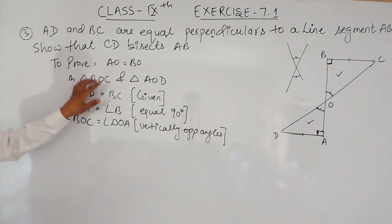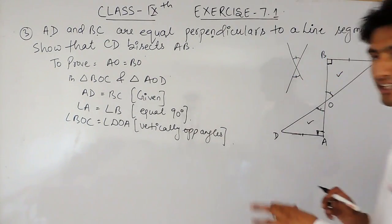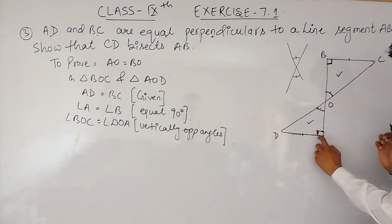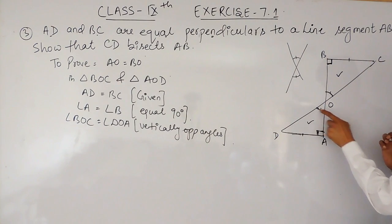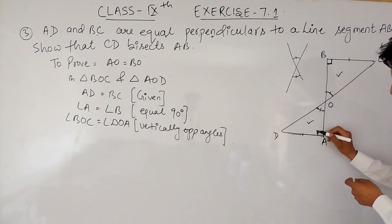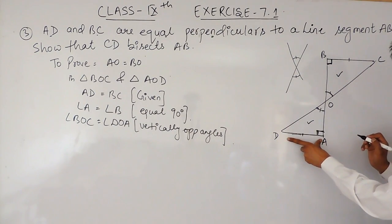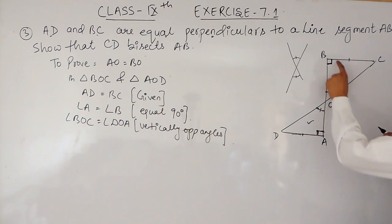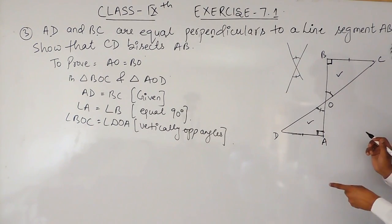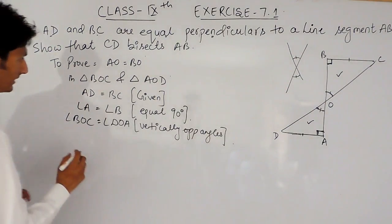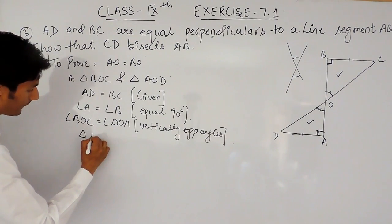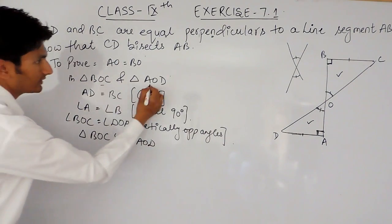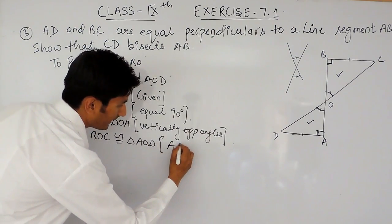So in these two triangles we have proved three things are equal: this side equals this side, this angle equals this angle, and this angle equals this angle. So by Angle Angle Side — because two angles and one side of triangle BOC and two angles and one side of triangle AOD are equal — by AAS we can conclude that triangle BOC is congruent to triangle AOD.